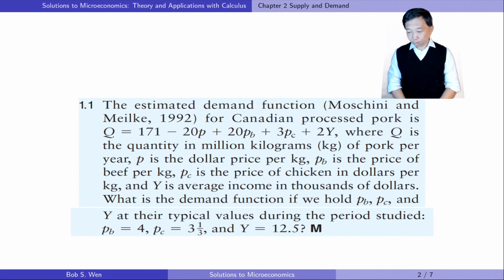The estimated demand function for Canadian processed pork is as follows, where Q is the quantity in million kilograms of pork per year, P is the dollar price per kilogram, Pb is the price of beef per kilogram, Pc is the price of chicken in dollars per kilogram, and y is the average income in thousands of dollars. What is the demand function if we hold Pb, Pc and y at their typical values during the period studied?